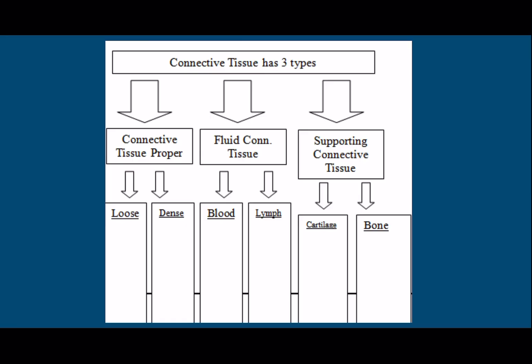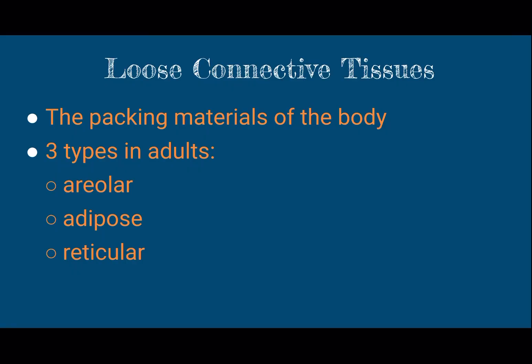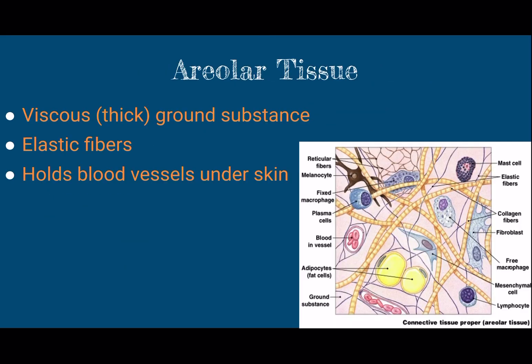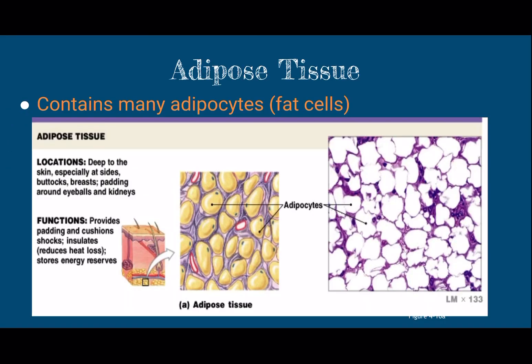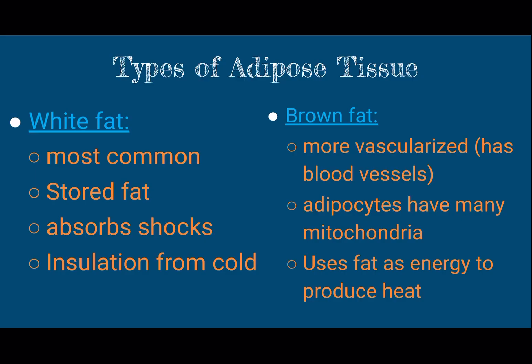We're going to talk a little bit about loose and dense in more specific terms. Loose: areolar tissue, adipose tissue, and reticular — those are the packing materials of the body. The areolar tissue we looked at earlier is found underneath your skin, right below the epithelial tissue, holding things together, holding your blood vessels, and so forth. Adipose tissue — the main cell is an adipocyte. The prefix adip means fat, and cyte means cell. It provides padding, shock absorption, and helps us store energy.